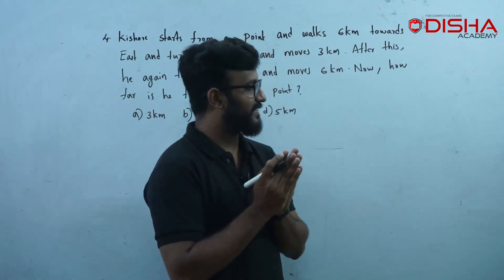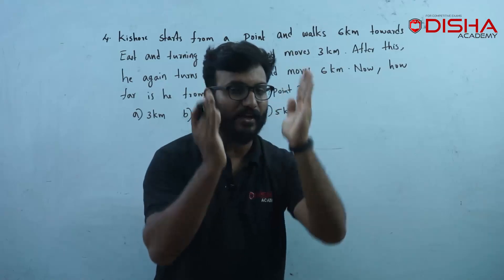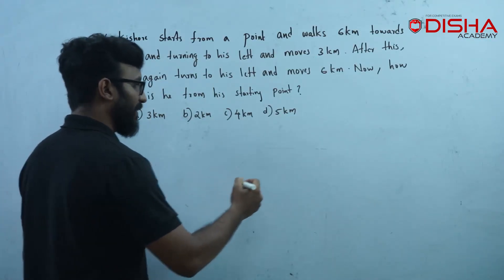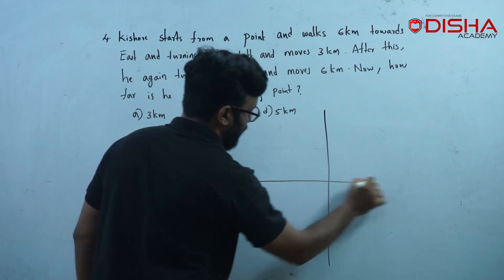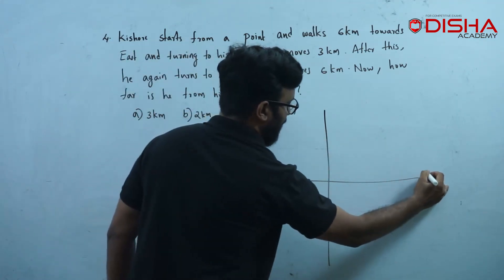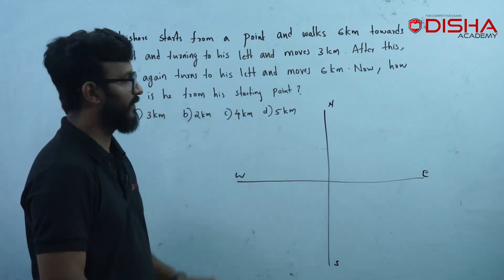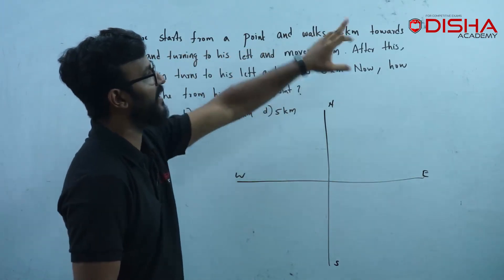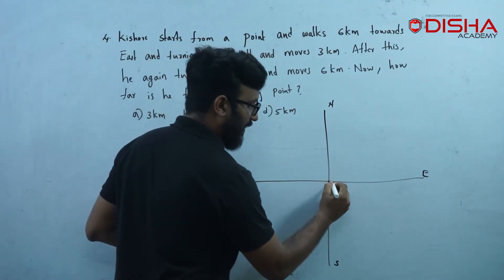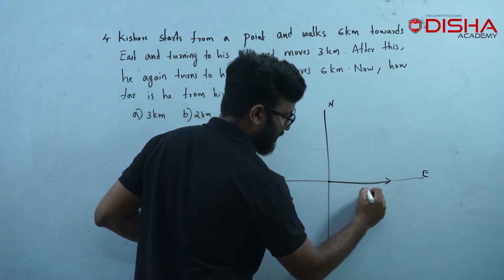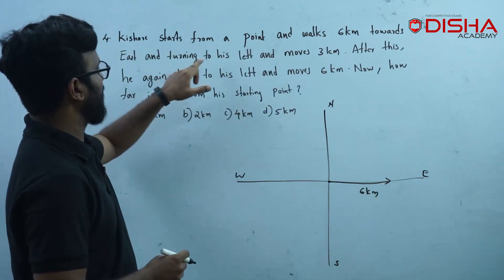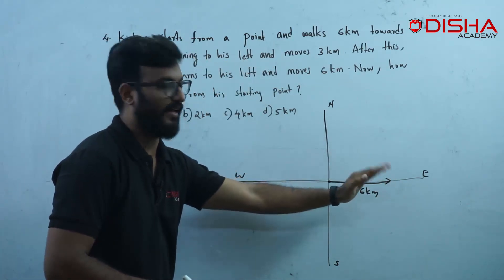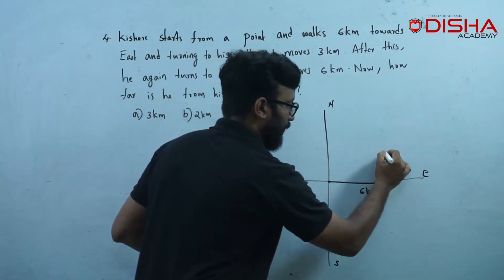If we have problems with distance, we will mark VNS and draw a rough structure. Kishore starts from a point and walks 6 km towards east — east direction, 6 km. Turning to his left and moving 3 km north. Then Kishore moves 3 km.